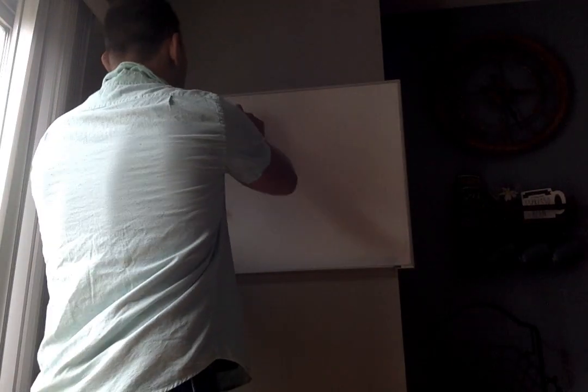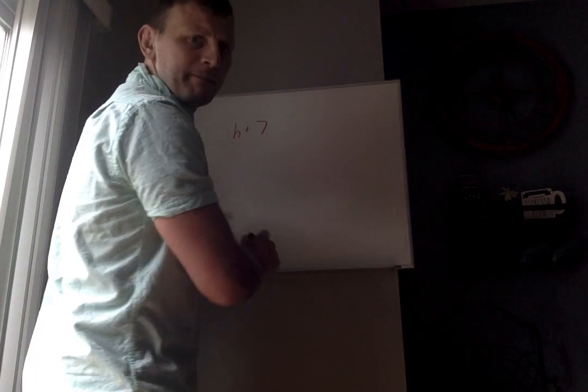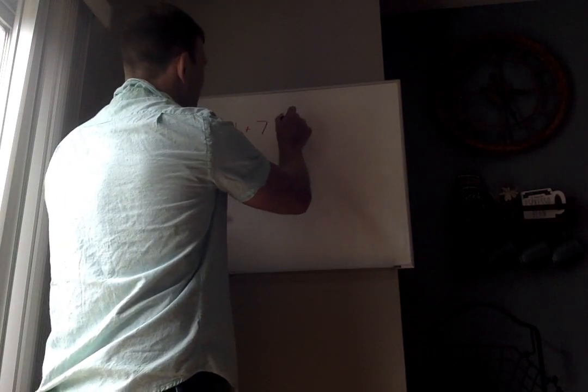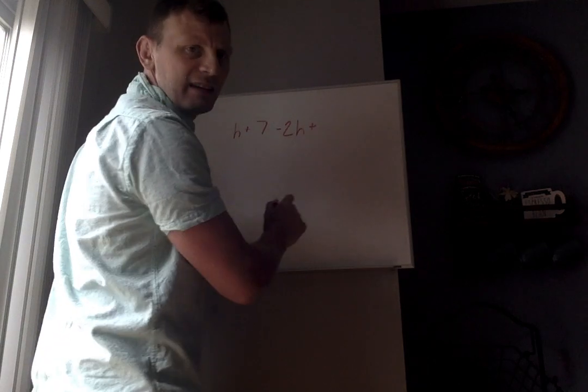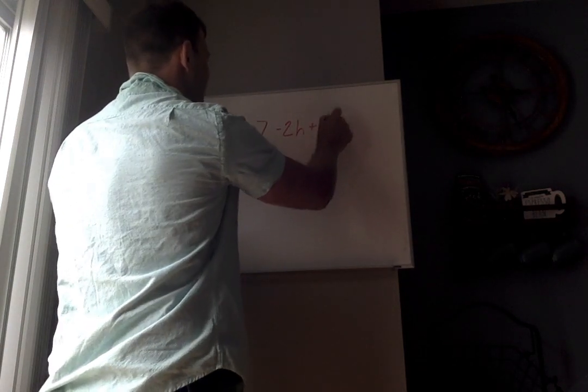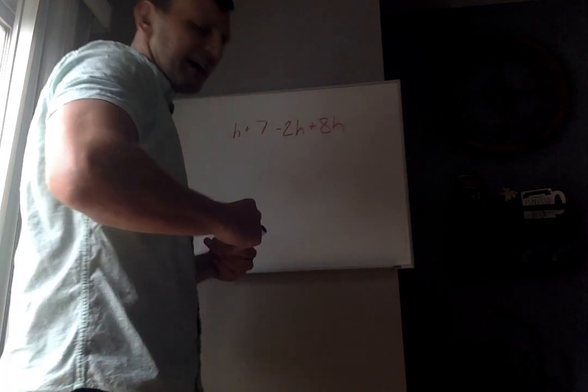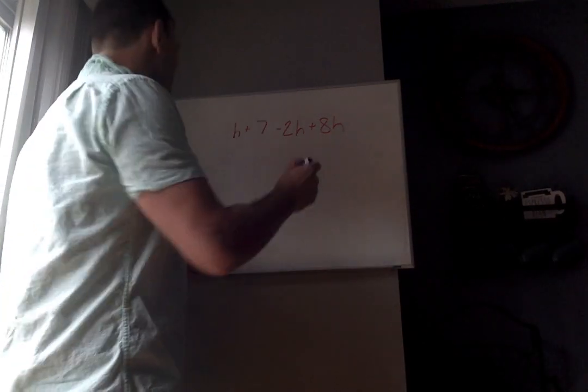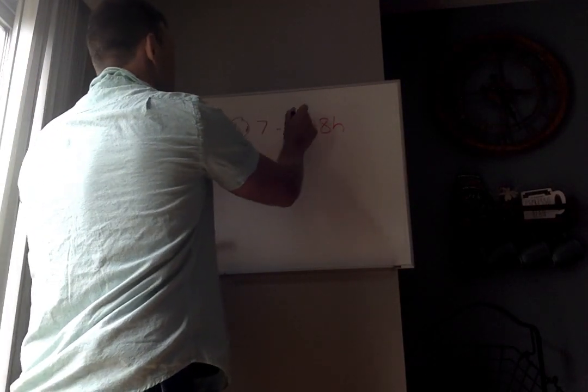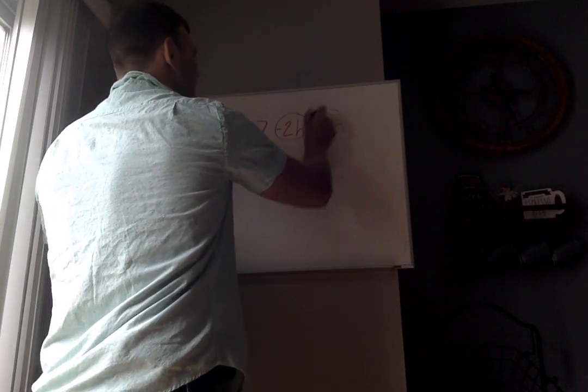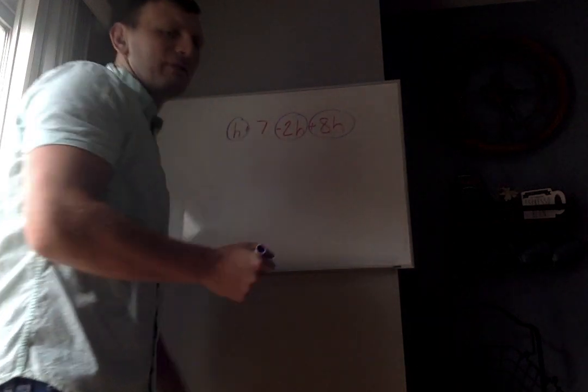So the first problem is h plus 7 minus 2h plus 8h. So now what we have here is we have a bunch of things with h's. We have h, negative 2h, and 8h. Notice I take the sign in front of it.